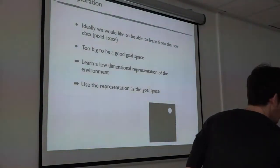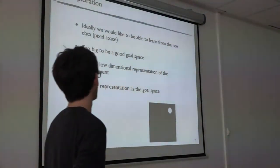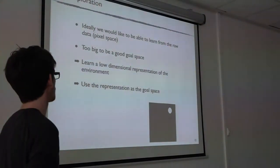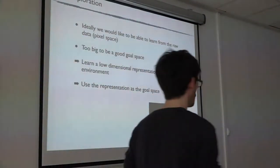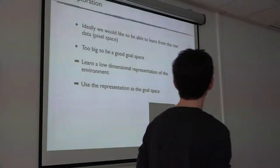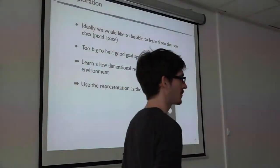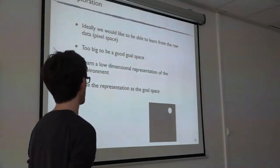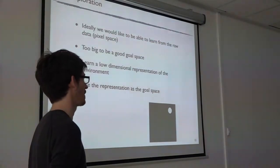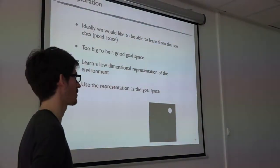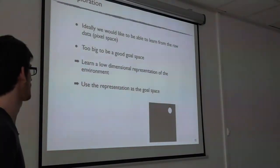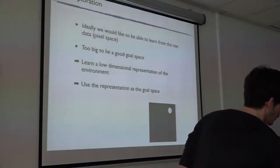What we would like to do ideally is to learn directly from raw data — in many environments, this would be the pixel space, which is usually too big and not structured. We would like to learn a low-dimensional representation of the environment that would be structured, so that points that are close in the observation space or close in the underlying reality would also be close in the representation. We could then use this representation as a goal space.